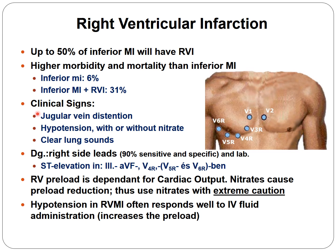Clinical signs: jugular vein distension, hypotension with or without nitrates, and clear lungs should make you think about right ventricular MI. For diagnosis, right-side leads are used with 90% sensitivity and specificity, along with troponin. ST elevation in leads 3, AVF, and V4R is typically used. V5R and V6R can also be used, but V4R alone can diagnose right-sided involvement.